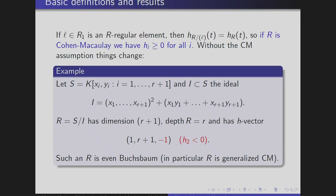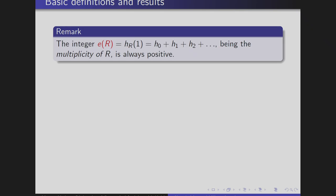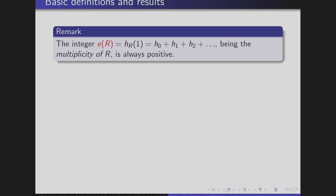So we have seen that depth alone is not enough to infer that some coefficients of the H-polynomial are non-negative. Of course the sum of all these coefficients is always positive because it equals the multiplicity of R.